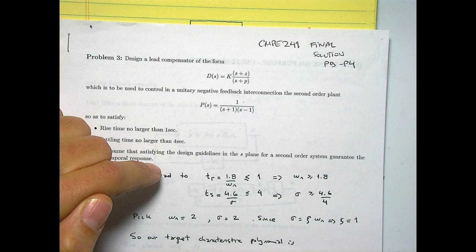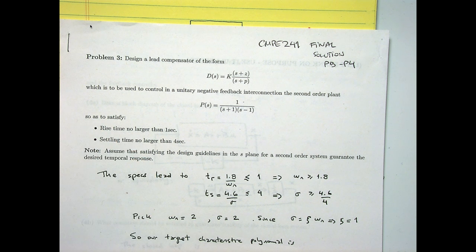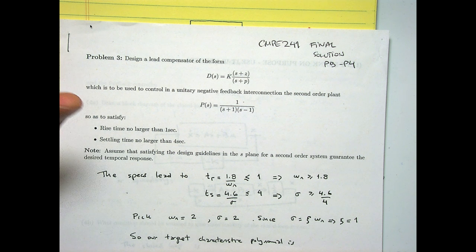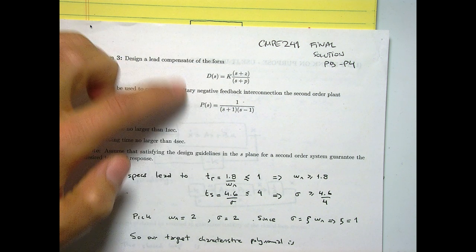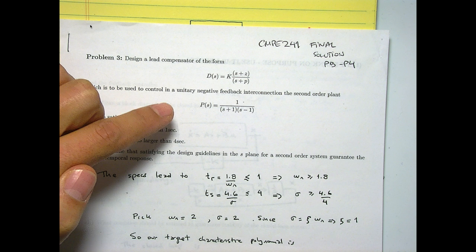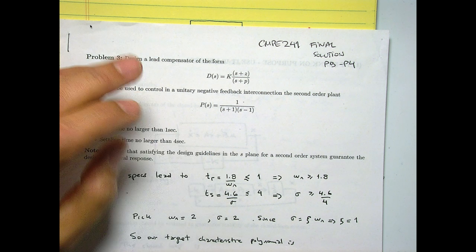You analyze the loop gain to get information about the closed-loop system. Always remember that you don't plot the Bode plot of the closed-loop system transfer function, because at the end of the day we're interested in the characteristic equation, which for unity negative feedback is 1 plus D times P. So we're interested in D times P equal to minus 1, and that's what we get from the plots.